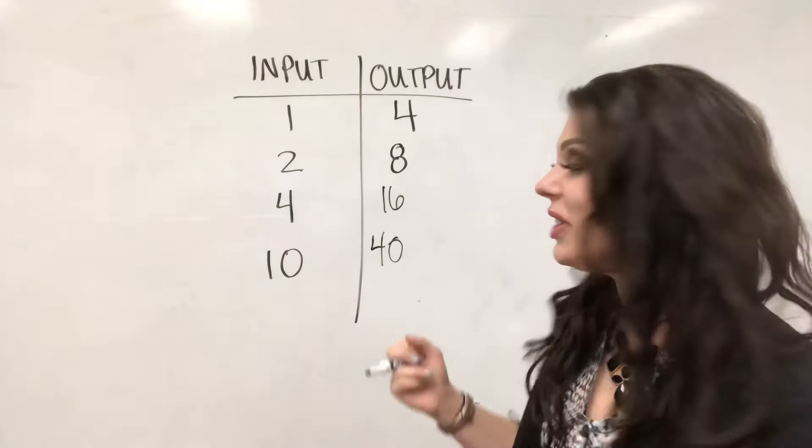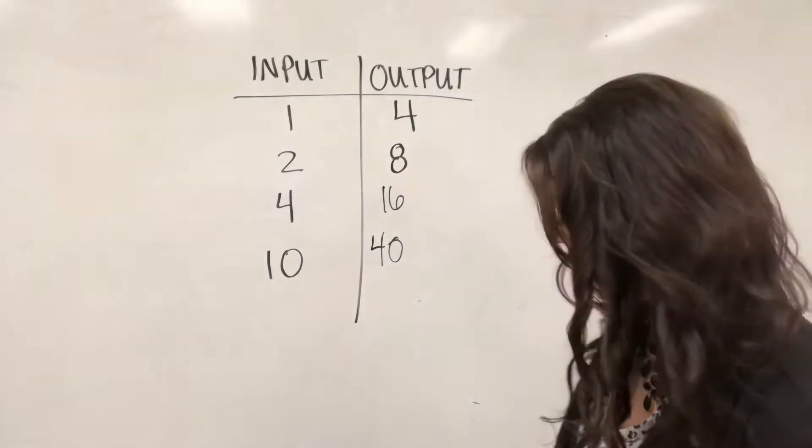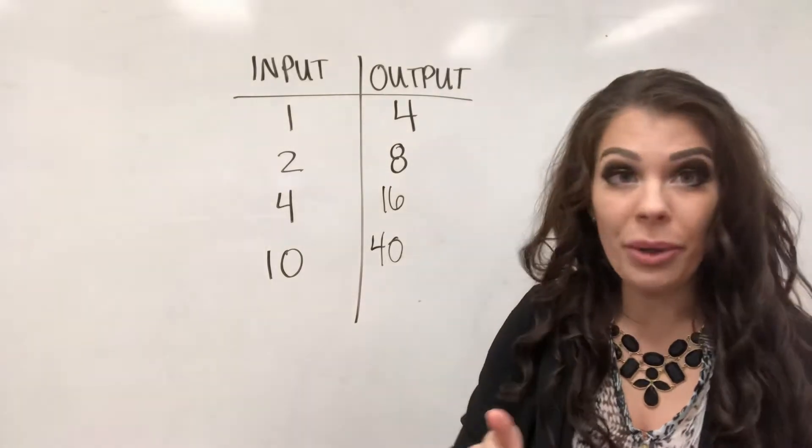So that's the trick, that's how you do it. The tips are: if it's going up, if my input is getting bigger, then it's gonna be a plus or a multiplication.